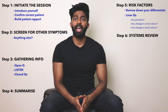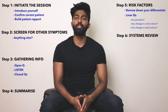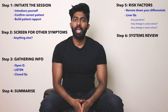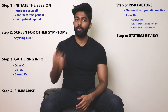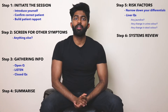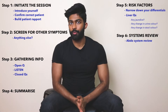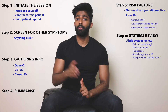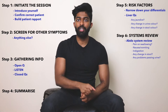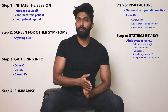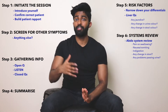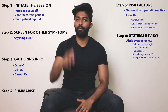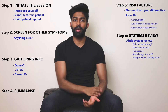Step 6 is your systems review. This is where I want you to do a very body-system-focused review of symptoms — anything that you may have missed in your screen, you'll catch now. For an abdominal systems review, I like to ask: any pain on swallowing, any nausea and vomiting, any indigestion, any change in stools — for example any blood in the stools or any change in stool habit — and also any problems passing urine, working your way down the abdominal tract.